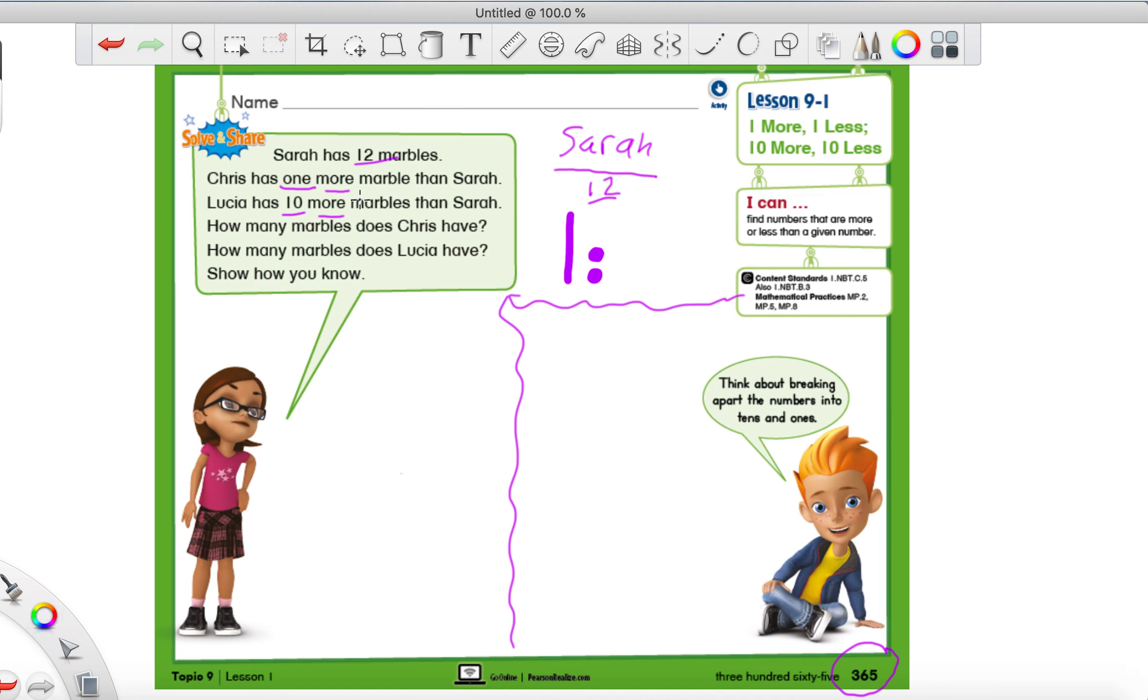Remember our 10 sticks, we're just going to draw a stick like that and it's going to count as a 10. Our 1 circles are just little circles like this and they count as 1s. We look at our 1s place for the number 12. There is a 1 in the 10s place, so we draw 1 ten. And there's a 2 in the 1s place, so we draw 2 ones.